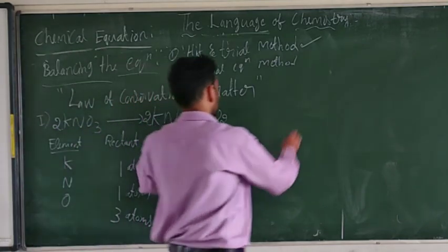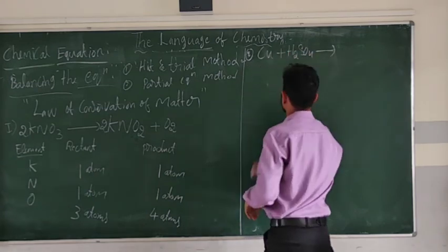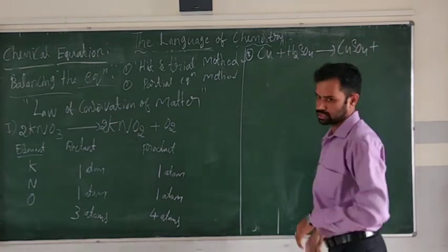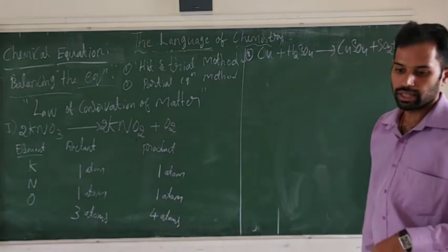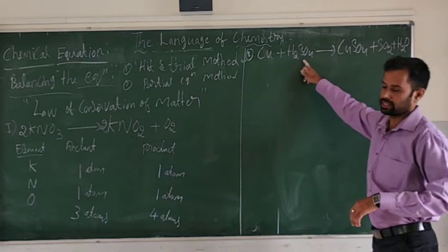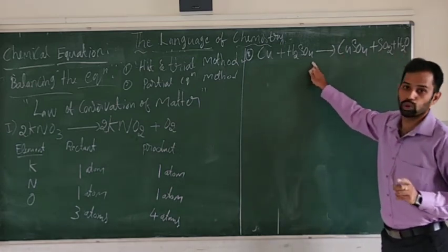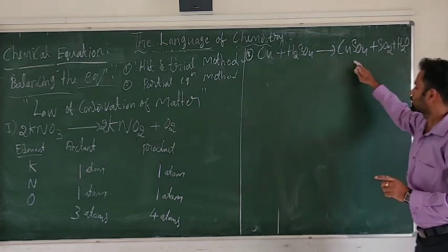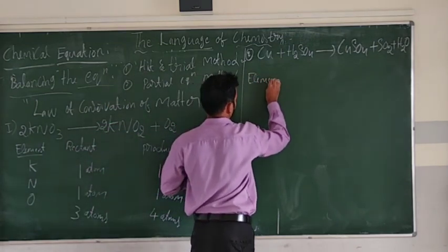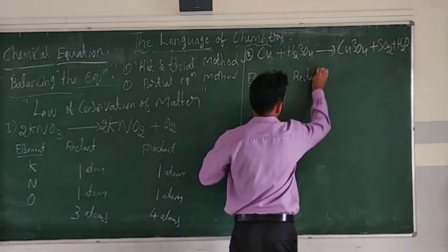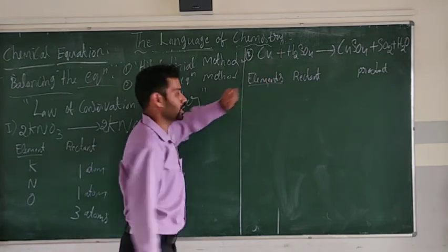One more example: copper reacts with sulfuric acid (H2SO4) to give copper sulfate (CuSO4), plus SO2, plus H2O. Two reactants, three products. First list the elements: copper, hydrogen, sulfur, oxygen.